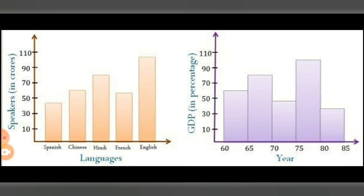In a bar graph, items are considered individual entities and it is common to rearrange blocks from highest to lowest. In a histogram this rearrangement cannot be done. Also, the width of rectangular blocks in a histogram may or may not be the same, while the width of bars in a bar graph is always the same.